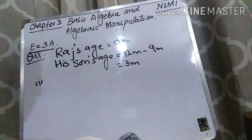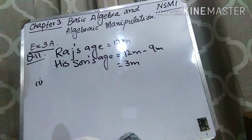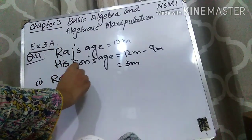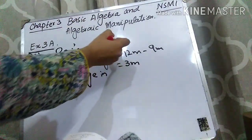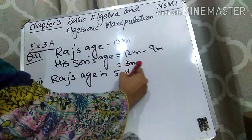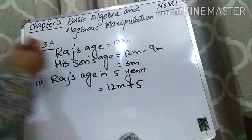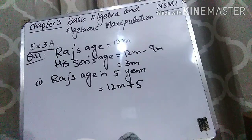Think about your own age — what will be your age after 5 years? How would you find out? What you will do is add the next 5 years to your current age. In the same way, to find Raj's age in 5 years, you just add those 5 years to his present age. So Raj's age in 5 years will be 12m plus 5.